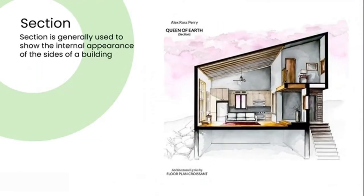For the purpose of interior design, the section is generally used to show the internal appearance of the side of a building. My general rule of thumb is to draw as many sections as you feel comfortable with so that all the correct heights, details, and information have been included, enabling your builder or client to understand the full picture. In a sliced building, you can see the walls, furniture, staircase detailing, and levels within the building.